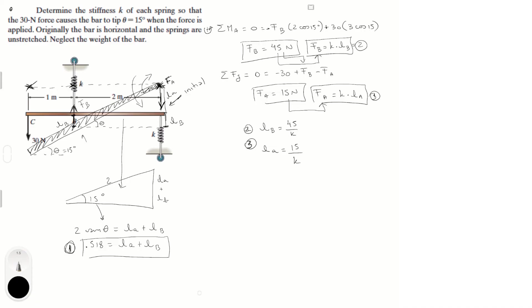And, we remember we have equation 1 that says 0.518 is equal to LA plus LB. So, we plug this in here, and we plug this in here, and we would have an equation with only one variable, which is K. 0.518 is equal to 15 over K plus 45 over K.